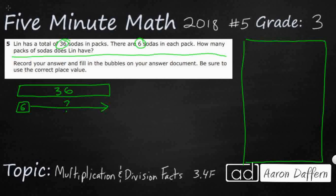Another way to do it would be to literally draw 36 little circles and then just circle them into packs of 6. But what I think I'm going to do is something called repeated subtraction. Repeated subtraction is something we can do — it's kind of like repeated addition, we just don't use it very often. So I'm just going to keep subtracting 6 from 36.